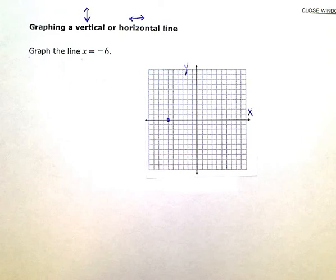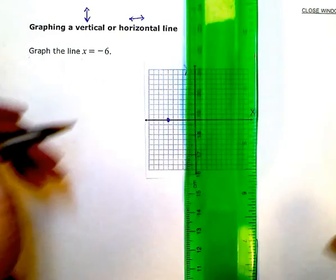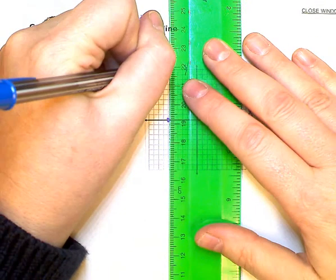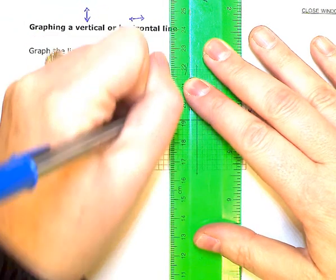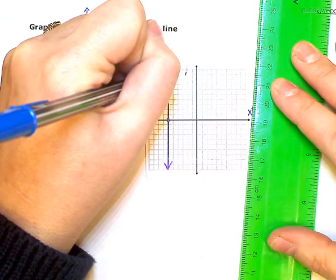So my line has to be vertical. I'm intercepting, or crossing, the x-axis only.